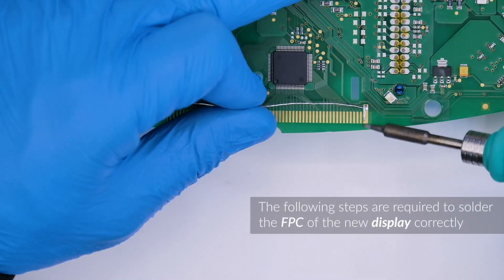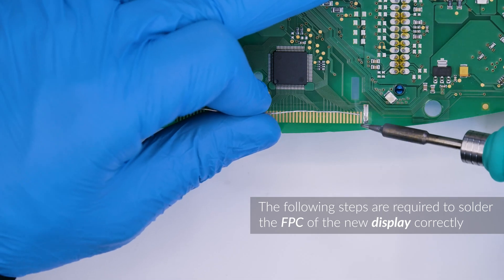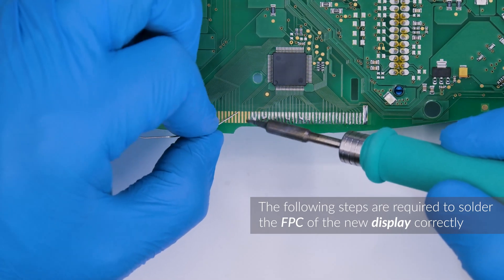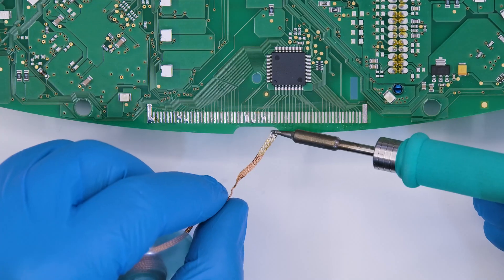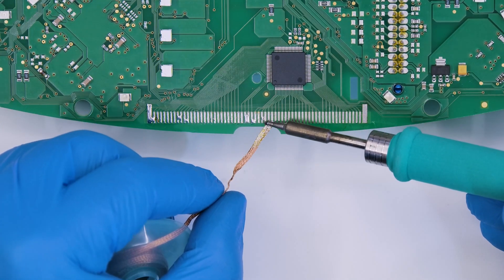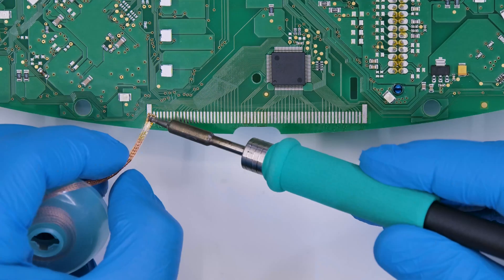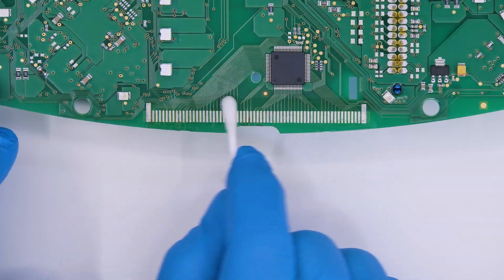With the soldering iron with conical tip, add some solder on the contacts on the board and remove the excess with the desoldering braid. Clean with some solvent.